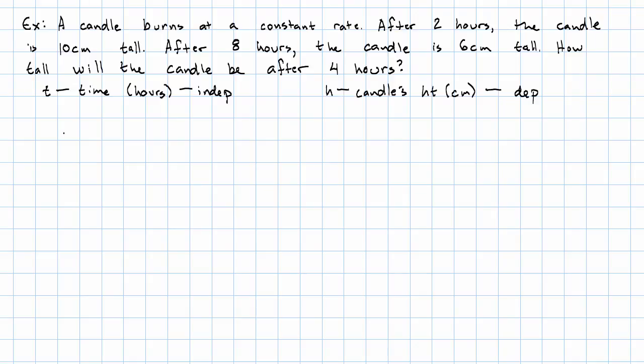What then are the values that we're given? In this problem, we're given three different values of T: two, eight, and four. We're given the value of H that goes with T equals two. After two hours, the candle is 10 centimeters tall. We're given the value of H that goes with T equals eight. After eight hours, the candle is six centimeters tall.